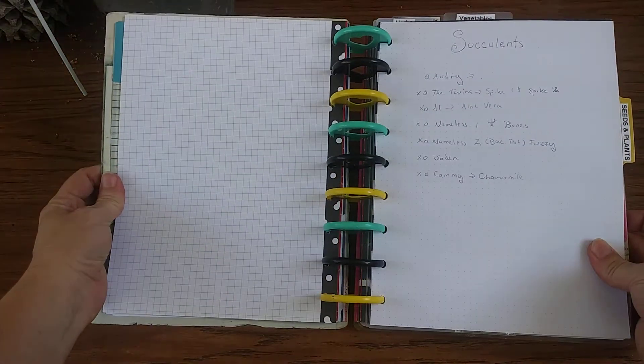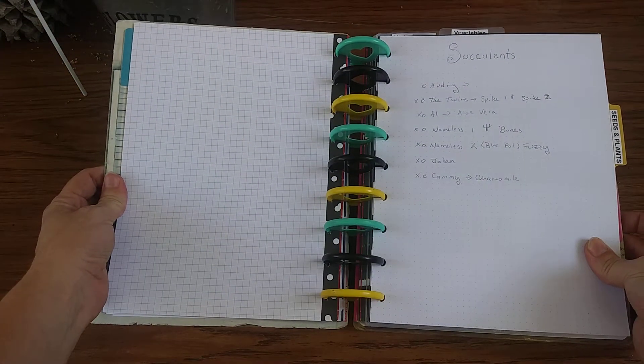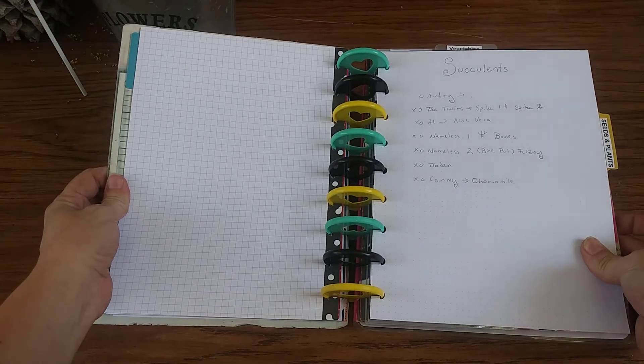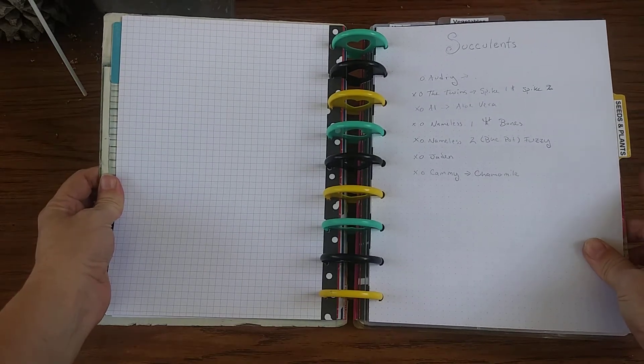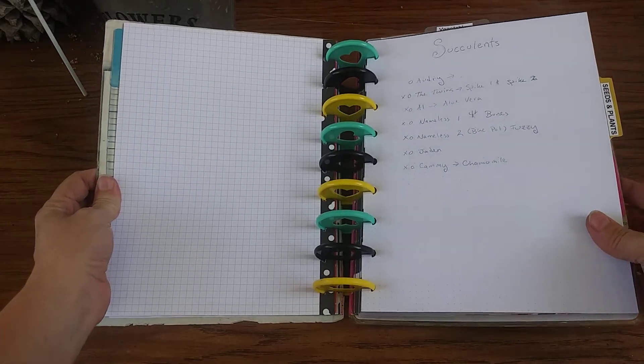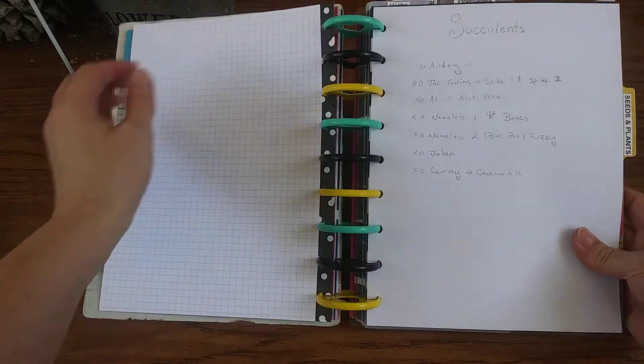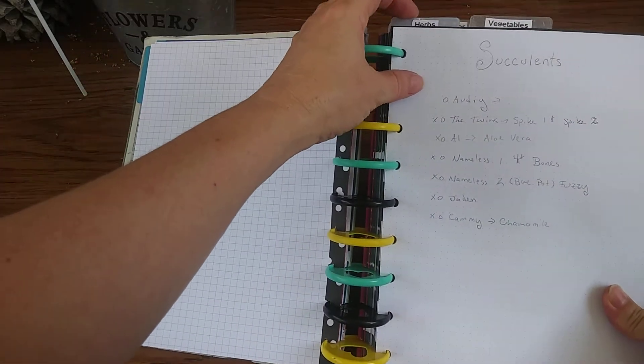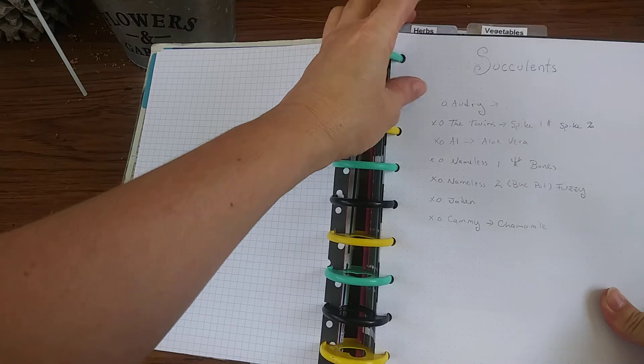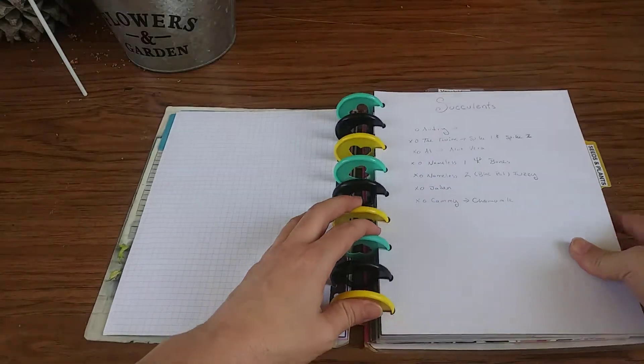This is a list of my succulents that I have, not very decorated pages just yet. And then if you can see on the side, I do have tabs. A lot of them are not named, but I do also have tabs on top when I get into that section.